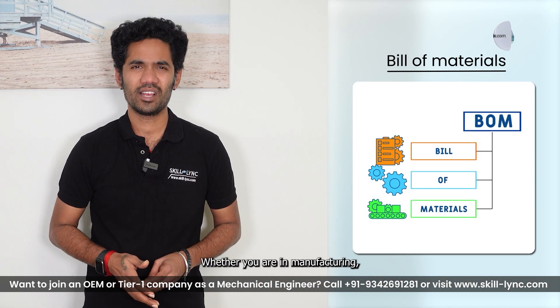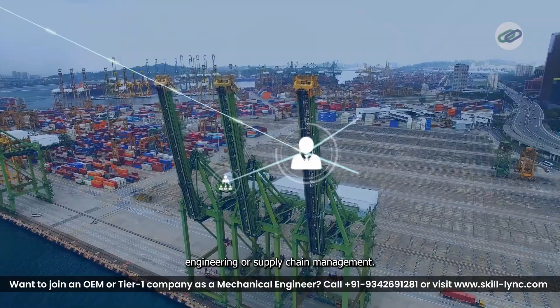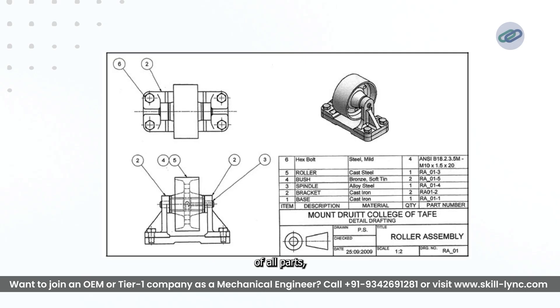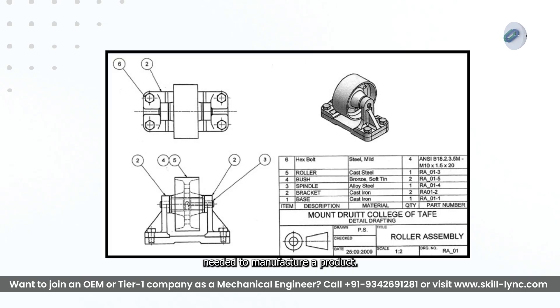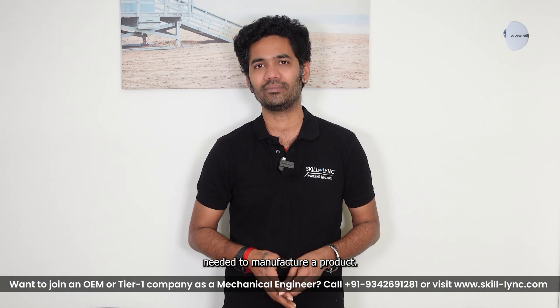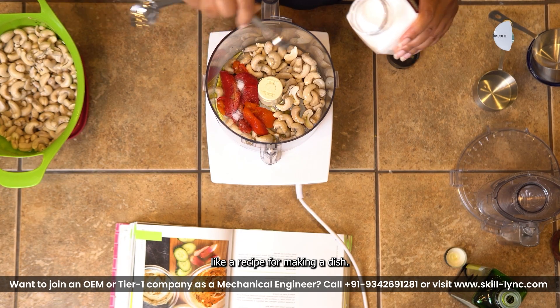Hello everyone, today let's talk about BOM — Bill of Materials. Whether you are in manufacturing, engineering, or supply chain management, BOM plays a very crucial role in production. A Bill of Materials is a detailed list of all parts, materials, and components needed to manufacture a product. Think of it like a recipe for making a dish — it tells you exactly what ingredients you need, in what quantity, and how they fit together.